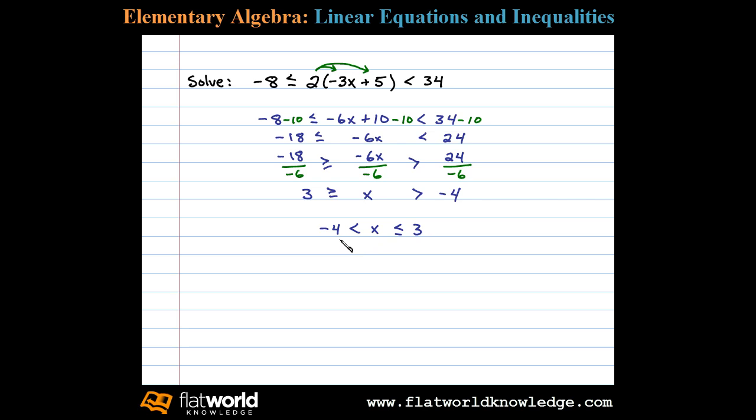So there are infinitely many solutions between -4 and 3, where 3 is inclusive. Let's shade those on a number line. Here the lower bound -4 is a strict inequality, so we use an open dot. The upper bound 3 is inclusive, so we use a closed dot and shade all the numbers in between. These are all the real numbers that solve the original inequality.